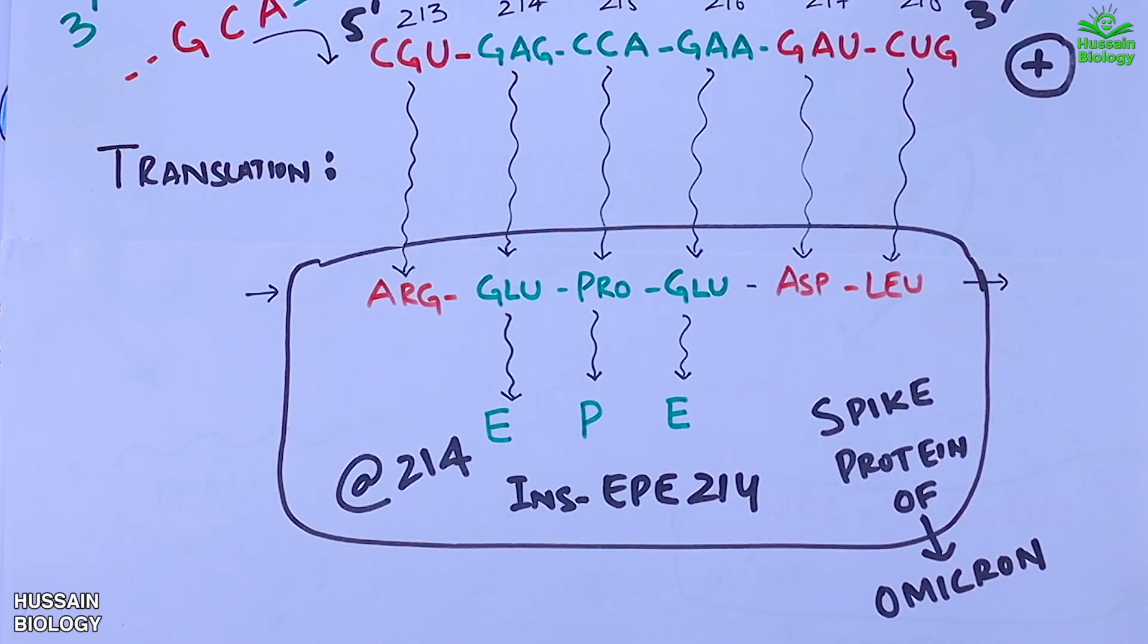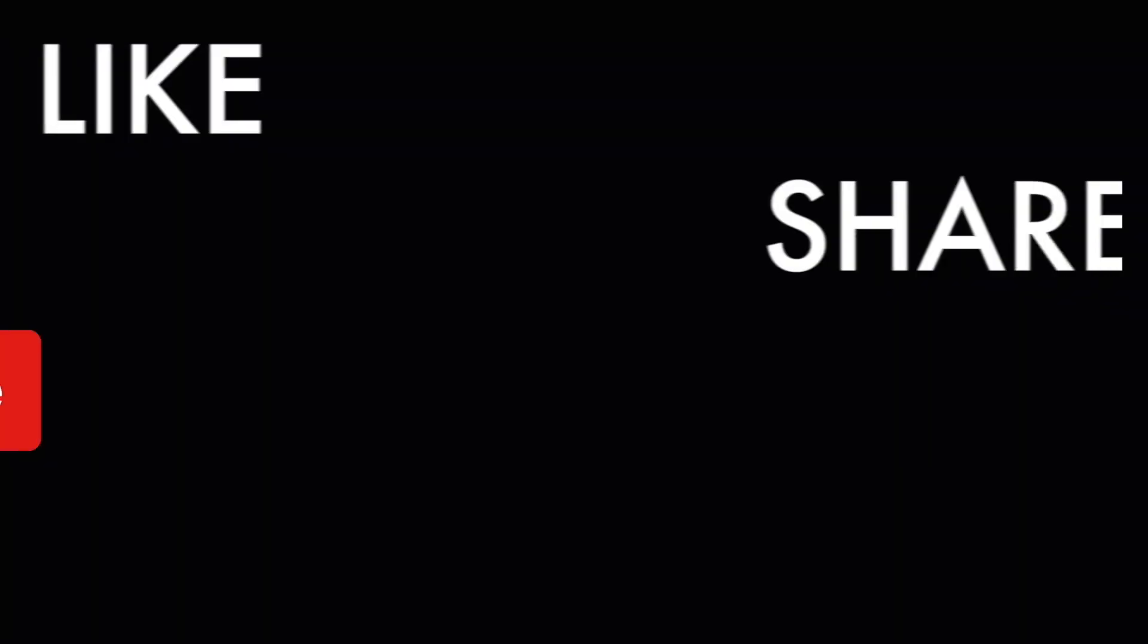So this is how we get common cold virus sequence insertion into the SARS-CoV-2 Omicron variant. Now the question is will these kind of mutations affect the transmissibility of Omicron variant or its severity. This will be seen pretty soon when the data will be available in the upcoming weeks.